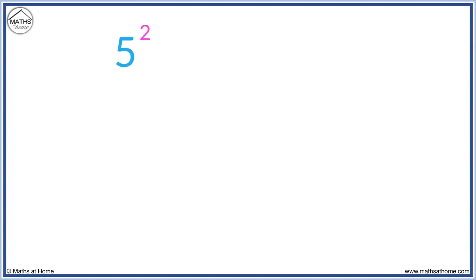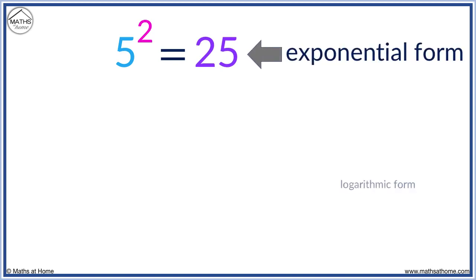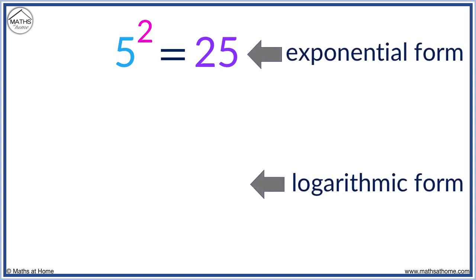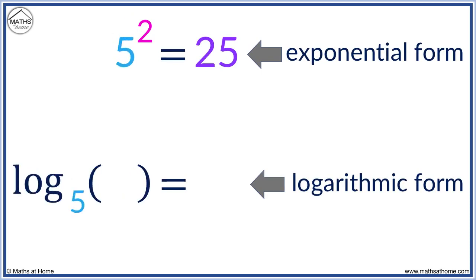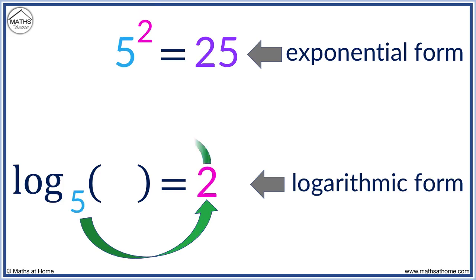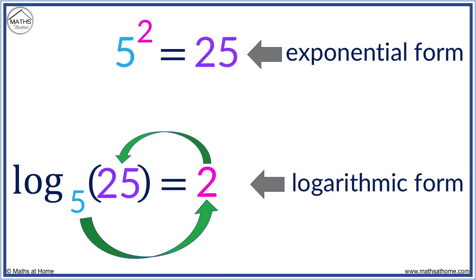For example, 5 squared equals 25. We will write this in logarithmic form. We write 'log', 5 goes here as the base, and we follow the spiral path: 2 goes here and 25 goes here. So 5 squared equals 25 is written as log base 5 of 25 equals 2.